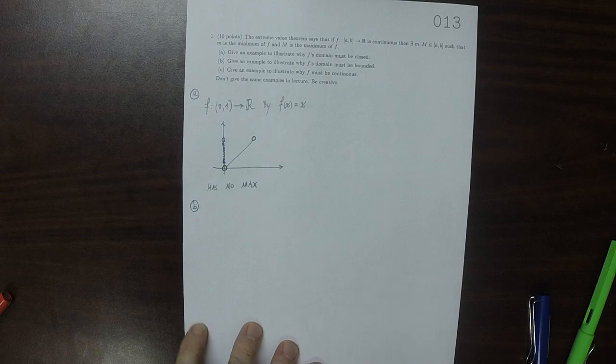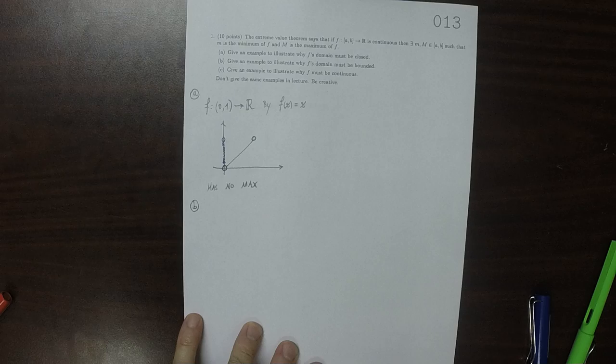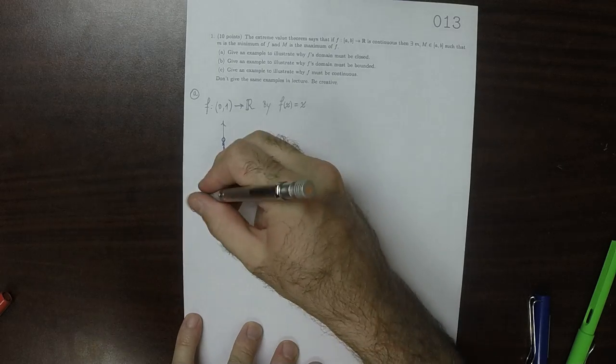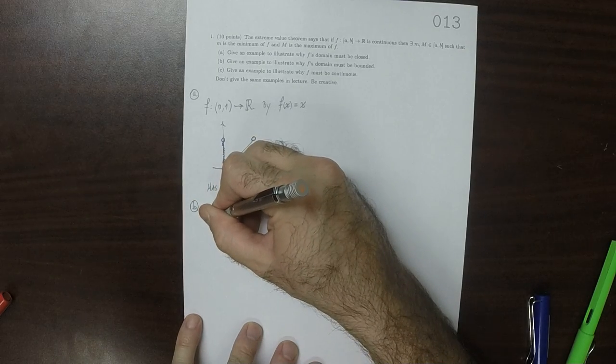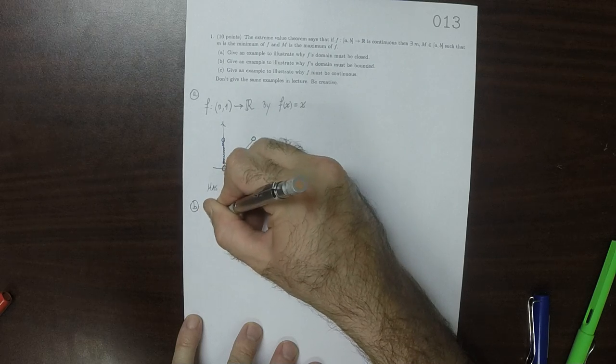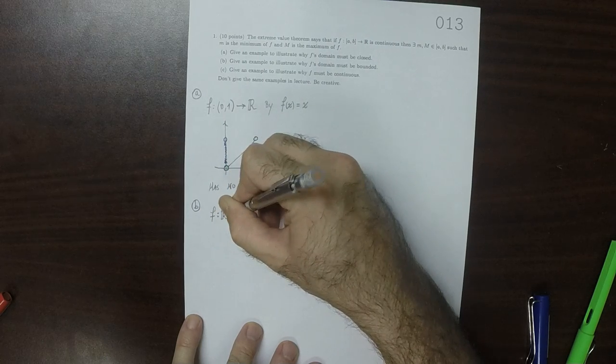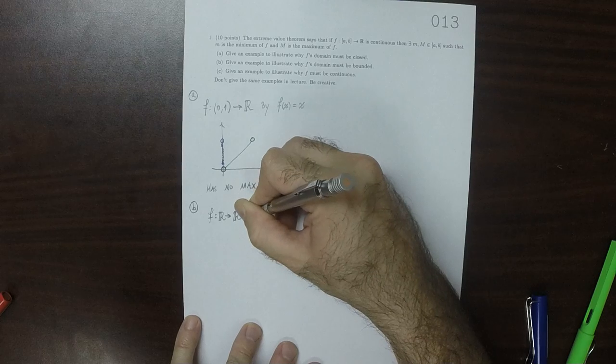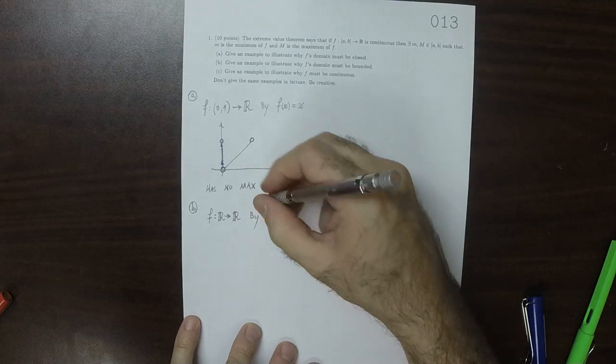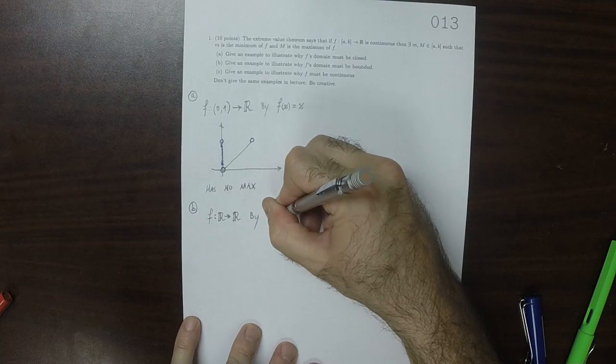Part B. Why must the domain be bounded? Okay, well, so how about F from reals to reals by again the identity function.